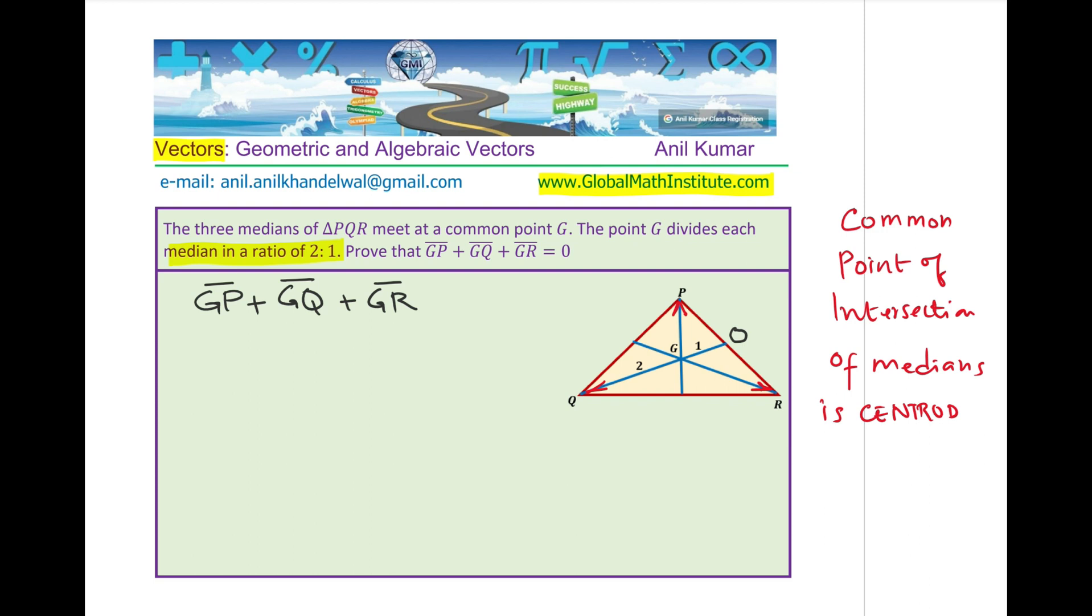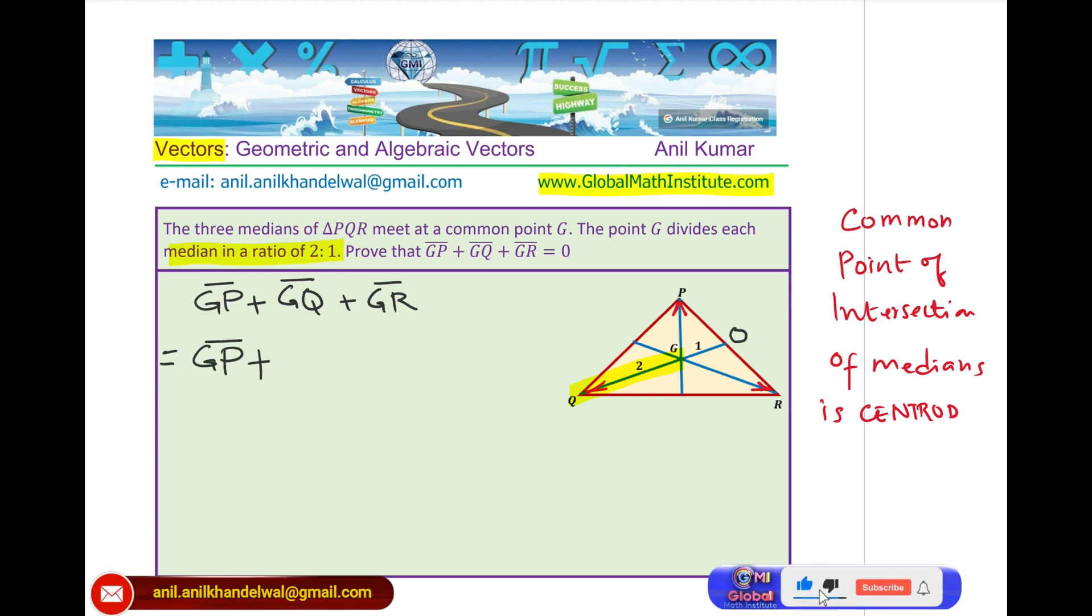If I see G to P is there and then GQ, G to Q is this side. If I could write G to Q as twice O to G, let me rewrite this as equal to G to P plus GQ is twice O to G.